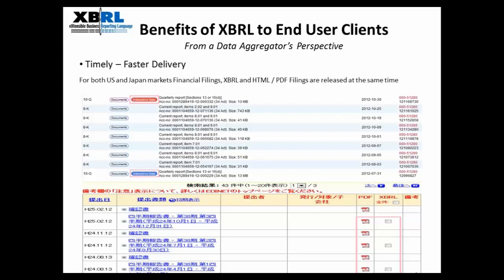We will next look at the benefits of using XBRL to end user clients. Firstly, XBRL provides a faster and more timely delivery of financial data. As shown in this screenshot for both the U.S. and Japanese markets, XBRL filings are now released at the same time as PDF and HTML filings. In the first screenshot, the interactive data icon shows the availability of XBRL filings, and in the second screenshot for the Japan market, you can see the PDF document and the XBRL document adjacent to it. For these two markets, the timely filing of XBRL financials coupled with processing efficiencies will allow financial data to reach clients in a shorter period of time.